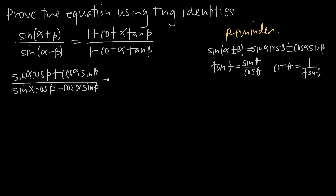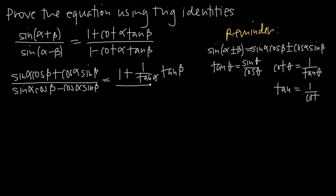Now we work on the right hand side. We use the reciprocal identity: cotangent of any angle equals 1 divided by tangent. So we replace cotangent(alpha) with 1 over tangent(alpha), giving us 1 plus (1/tangent(alpha))·tangent(beta) in the numerator, and 1 minus (1/tangent(alpha))·tangent(beta) in the denominator.